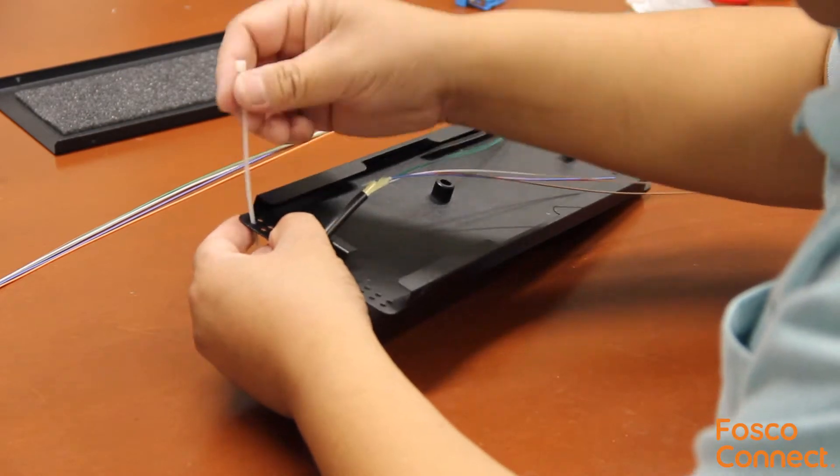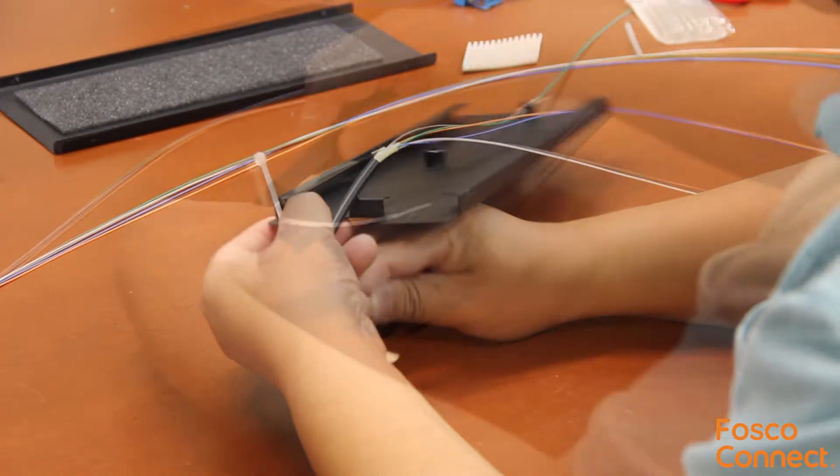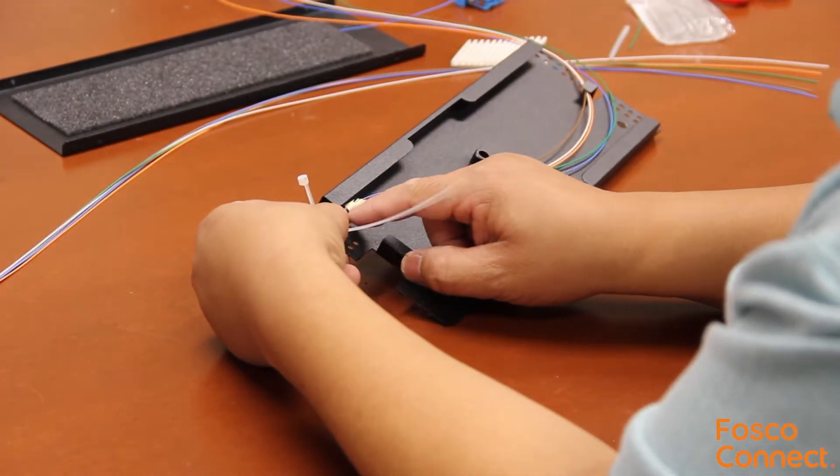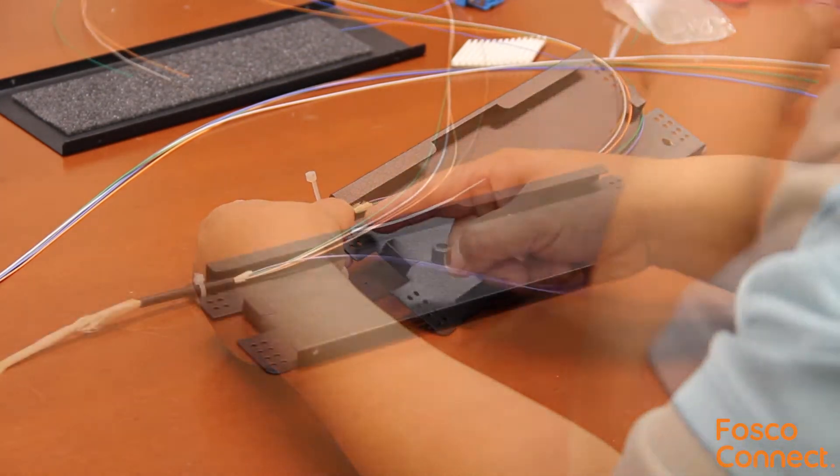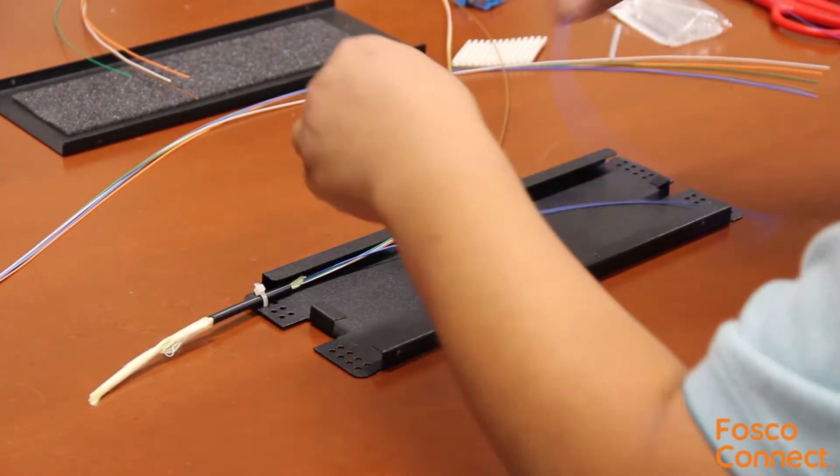Now we can use the tie wrap to hold the buffer tubes in the tray. Leave about 1/4 inch of buffer tube after the tie wrap. Now leave 1 1/2 loop of each fiber.